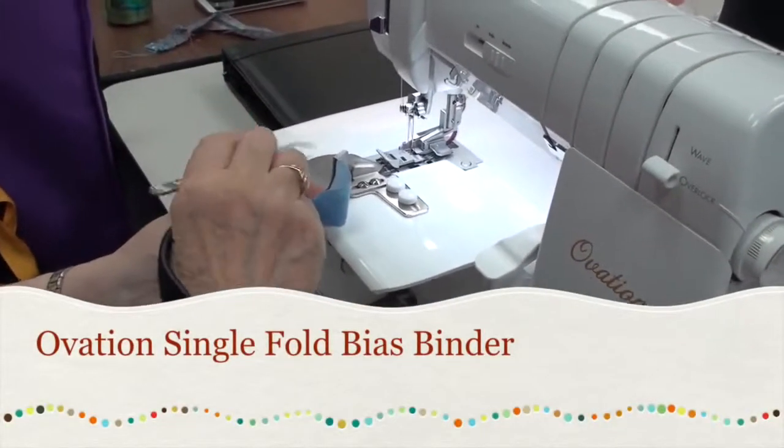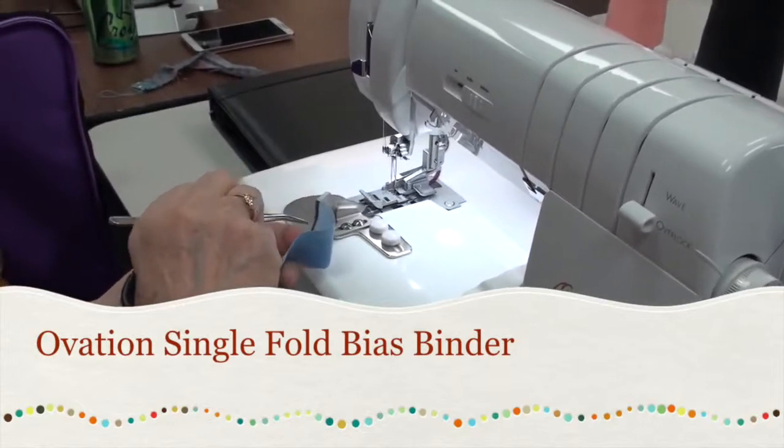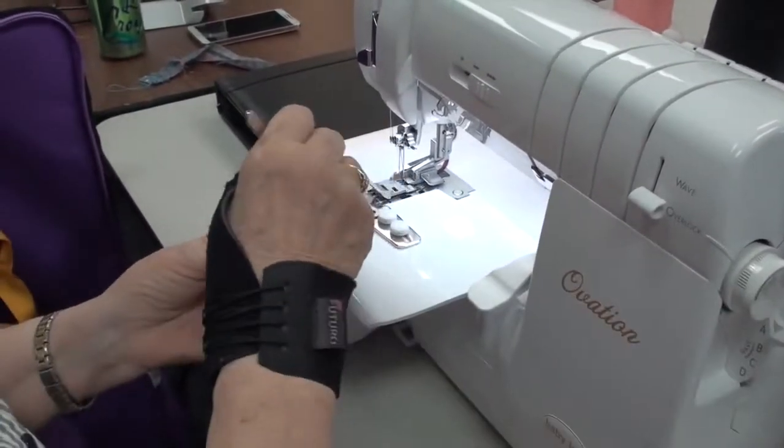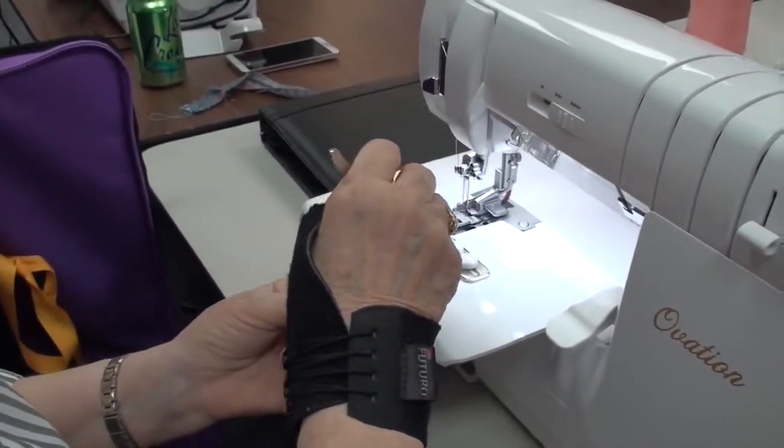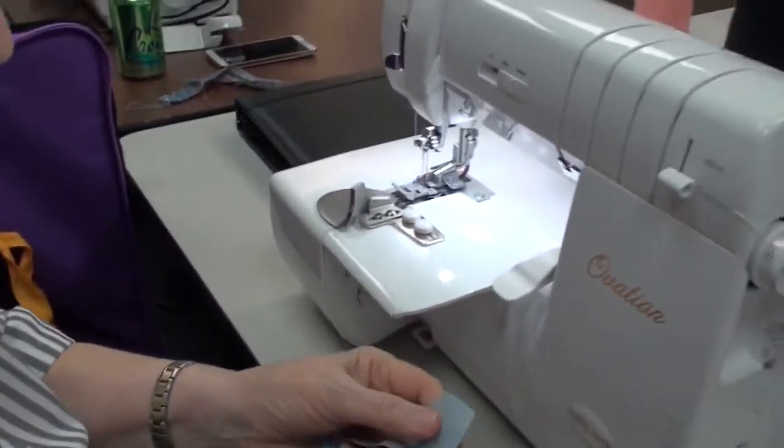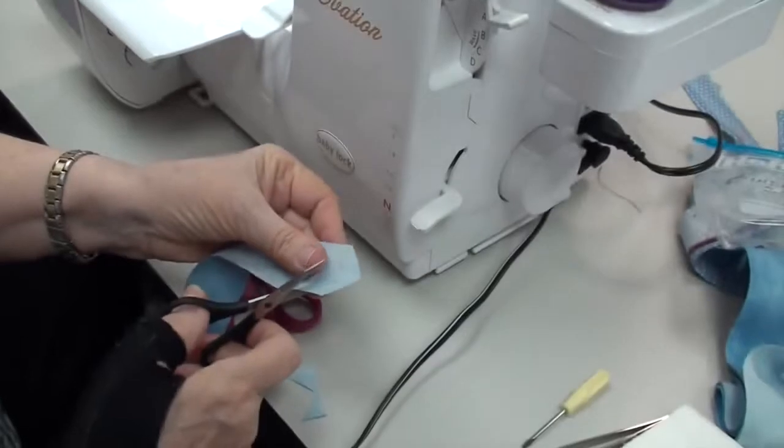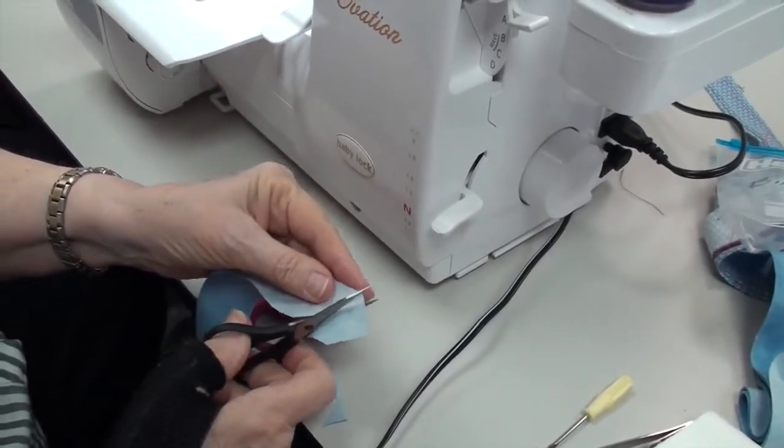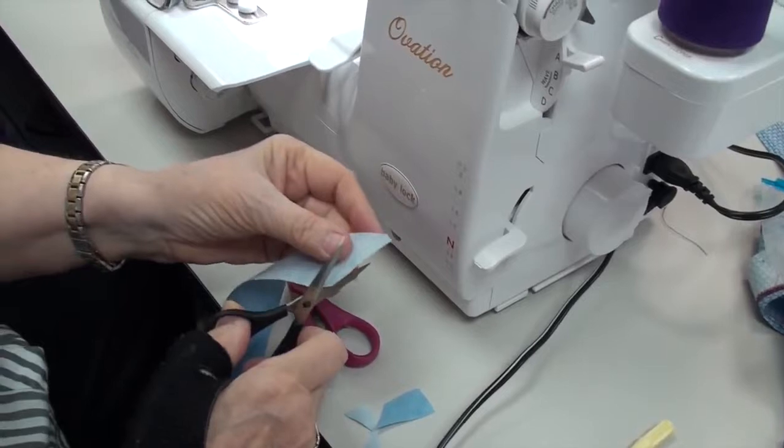Okay, this is the single fold bias binder giving me fits because I didn't cut it right. I cut it like this and I should have cut it like this. The other one was a double fold where I folded on the front and the back. This is just going to fold on the front and the back should stay flat.